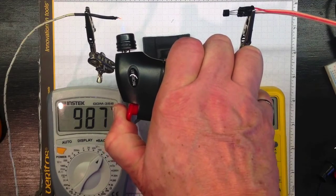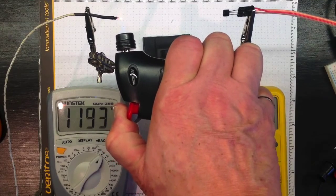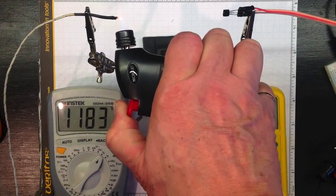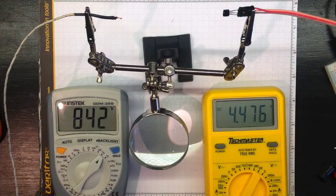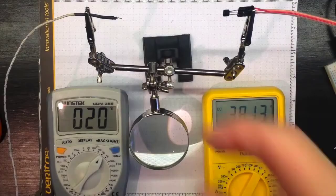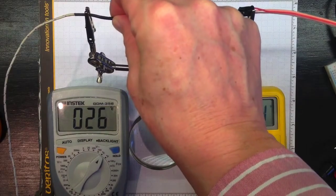We can get the thermocouple glowing too. When we take the torch away, it cools quickly. The moment of truth for the thermocouple - it's okay.